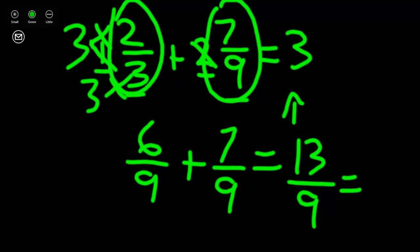The way we change this into a mixed number is we see how many wholes can fit into our numerator. Our whole is 9, 9 goes into 13 one time with 4 left over. So this changes to the mixed number of 1 and 4 ninths.